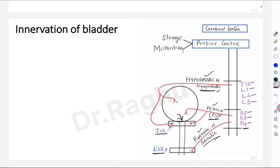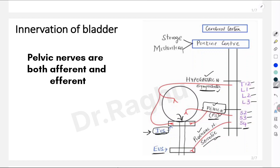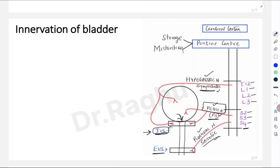Whenever there is sympathetic stimulation, the hypogastric nerves cause relaxation of the detrusor muscle and contraction of the internal urethral sphincter. Whenever there is stimulation of the parasympathetic nerves via the pelvic nerve — arising from S2, S3 and S4 — they cause contraction of the detrusor muscle and relaxation of the internal urethral sphincter. The pelvic nerves also act as afferent nerves, carrying stretch sensation from the urinary bladder when it is filling or full. Pudendal nerve stimulation causes contraction of the external urethral sphincter.